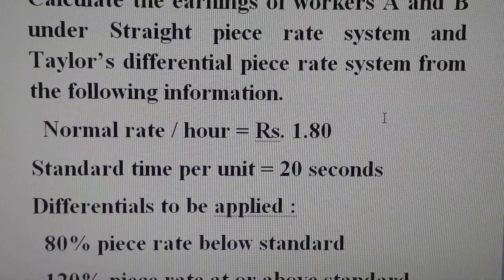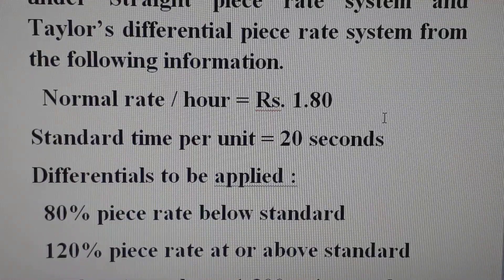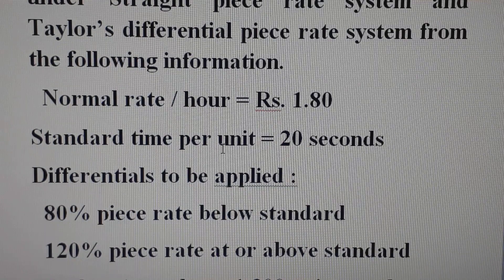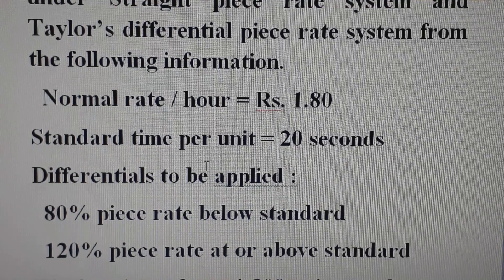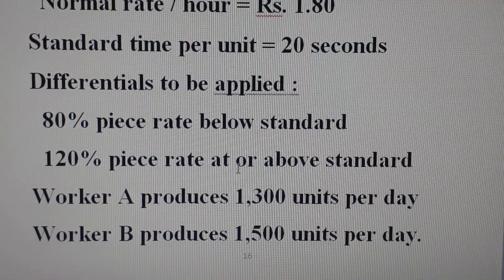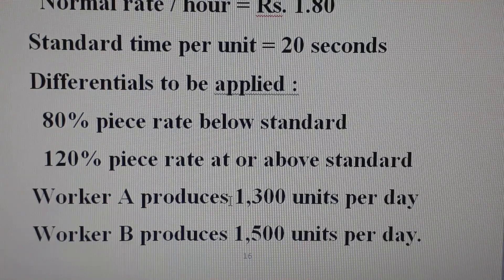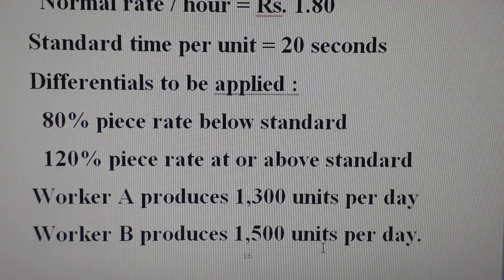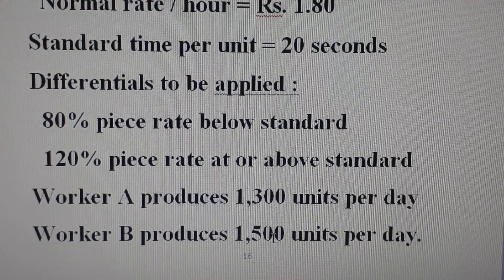Normal rate per hour is Rs 1.80. Standard time per unit is 20 seconds. The differential is to be applied: 80% of piece rate is below standard and 120% of piece rate is at or above standard. Worker A produces 1300 units per day and Worker B produces 1500 units per day.